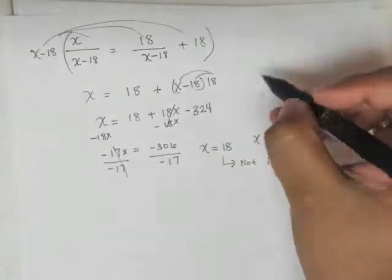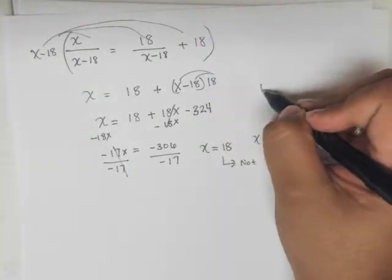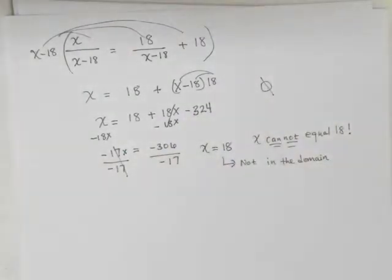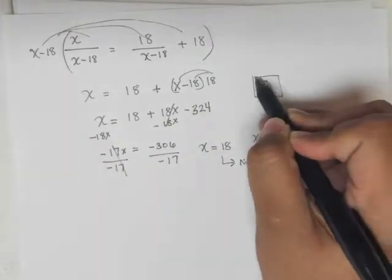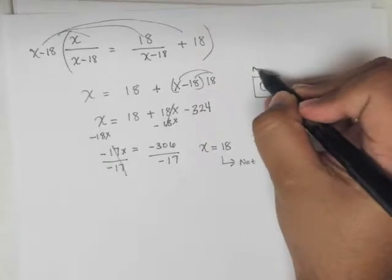So therefore, the result is that there is no solution. And sometimes in math, we say no solution, and we mean this. They might call it null.